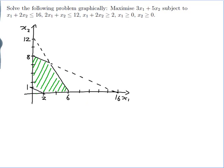Now all I need to do is actually maximise the function I'm interested in. Let y be equal to 3x1 plus 5x2. The theory of maximisation and convex sets says that the maximum value of this function will happen at one of the vertices of my set. The vertices of my set are at five corner points. One approach is to find the coordinates of all those vertices, substitute them into my formula, and whichever gives the maximum is the answer.